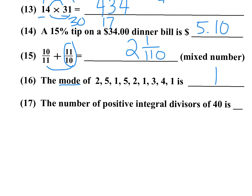Number 17: The number of positive integral divisors of 40. You can list the factor pairs: 1 and 40, 2 and 20, 4 and 10, 5 and 8. That gives 8 factors.